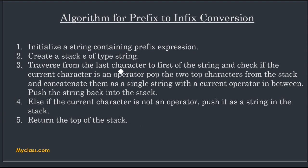We create a stack, then traverse from right to left — that is, starting from the last character to the first character of the string. We check if the current character is an operator, then pop the two topmost characters from the stack and concatenate them as a single string with the current operator in between. Then we push that resulting string back into our stack.